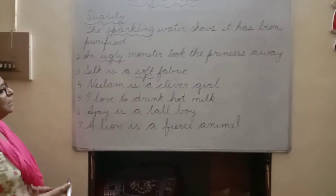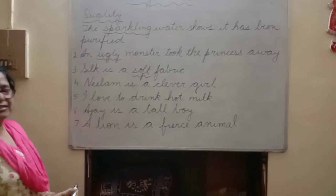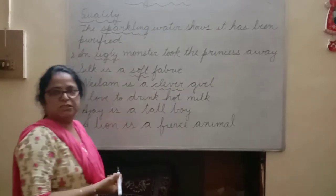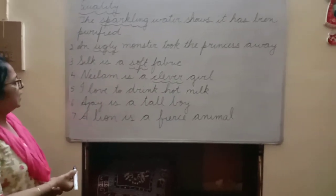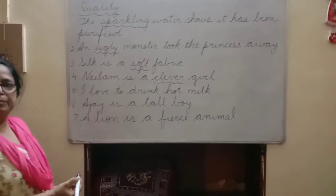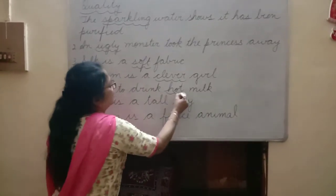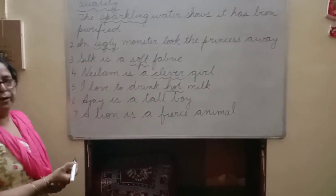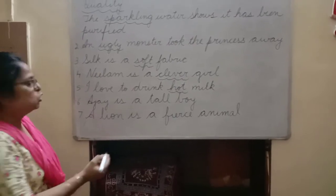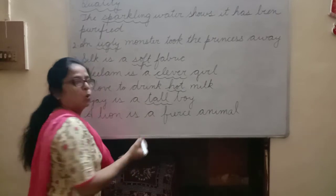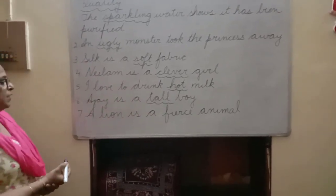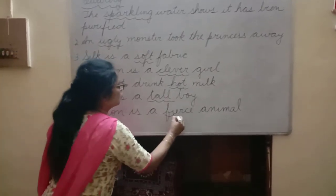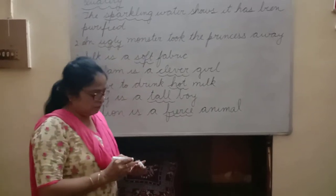The fourth sentence: 'Neelam is a clever girl' — what kind of girl is Neelam? She is a clever girl, so 'clever' is an adjective of quality. Number five: 'I love to drink hot milk' — milk is described as hot, so 'hot' is an adjective of quality. Number six: 'Ajay is a tall boy' — boy has been described as tall, so 'tall' is an adjective of quality. And the last one: 'A lion is a fierce animal' — what kind of animal is a lion? It is a fierce animal, so 'fierce' is an adjective of quality.